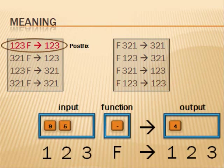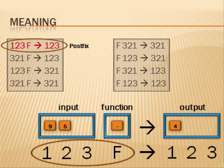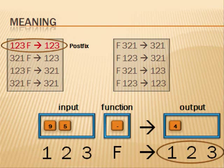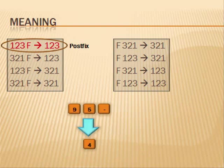What is the meaning of these representations? For postfix, the input is placed before the function. The letter F shows the location of the function relative to the input. The input is ordered from left to right, and the output is also ordered from left to right. In postfix, nine five subtract produces four.